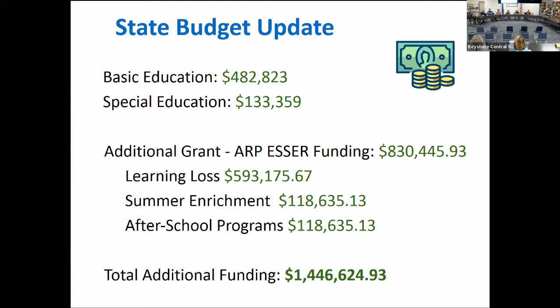Under the ESSER funding, they did things differently this time — instead of a flat pot of $830,000 to spend as desired, they are telling the district where it needs to be spent with additional constraints. The three buckets for the ARP ESSER round are learning loss, summer enrichment, and after-school programs. Within the learning loss bucket, 30% of that money needs to be spent on social emotional learning.